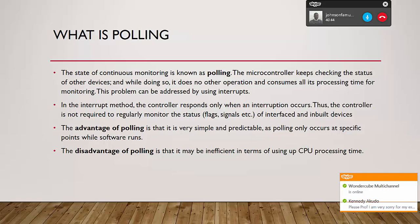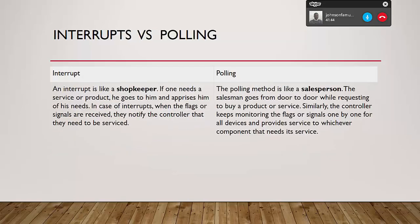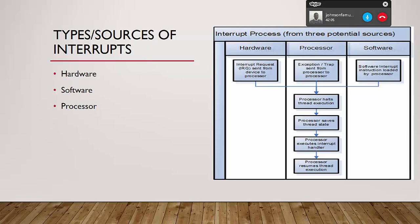A real-time analogy for interrupt versus polling: an interrupt is like a shopkeeper that stays in the shop and quickly attends to people that come to him seeking attention, while polling is like a salesperson that goes around selling their product — proactively seeking out what needs attention.